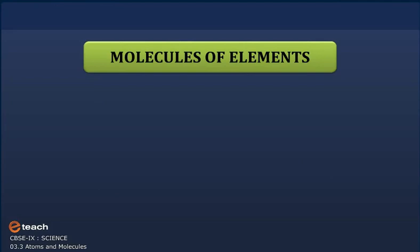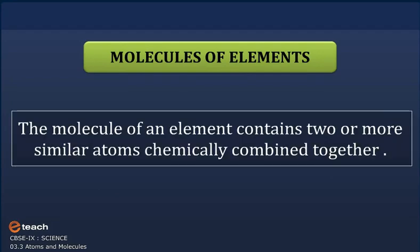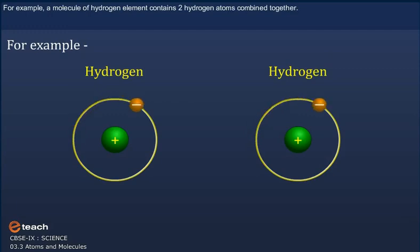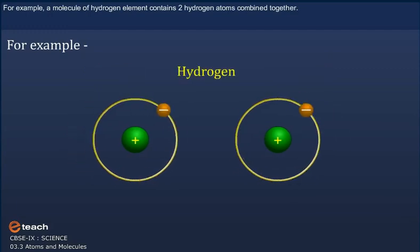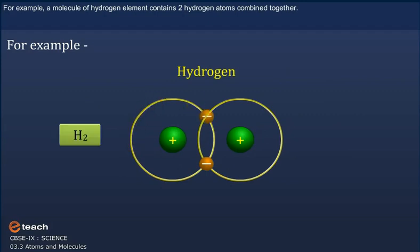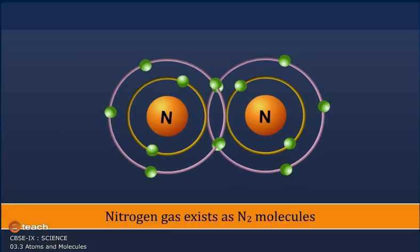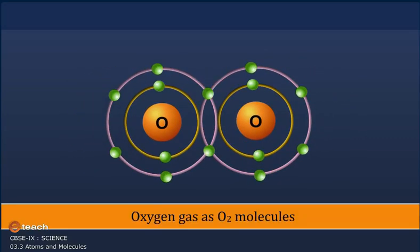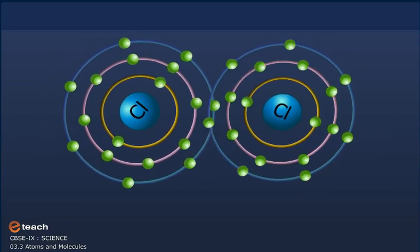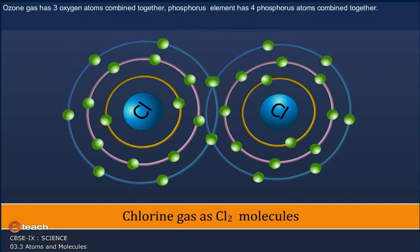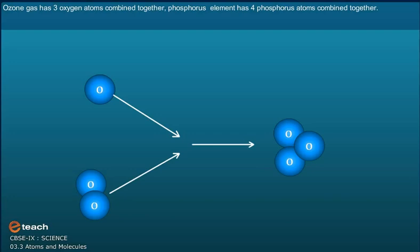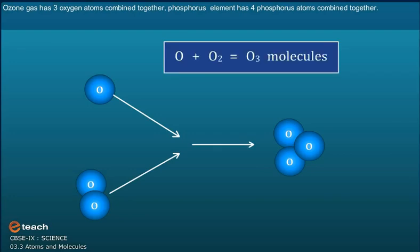The molecule of an element contains two or more similar atoms chemically combined together. Hydrogen gas consists of H2 molecules and not of single atoms H. Nitrogen gas exists as N2 molecules, oxygen gas as O2 molecules, and chlorine gas as Cl2 molecules. Ozone gas has three oxygen atoms combined together, so ozone exists in the form of O3 molecules.